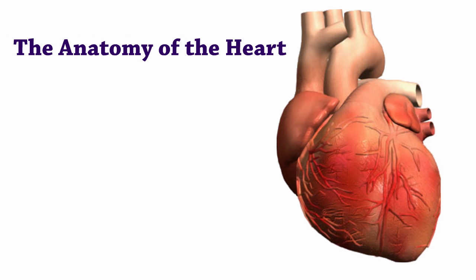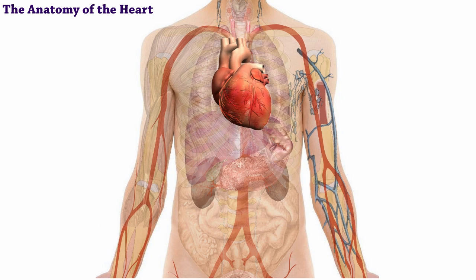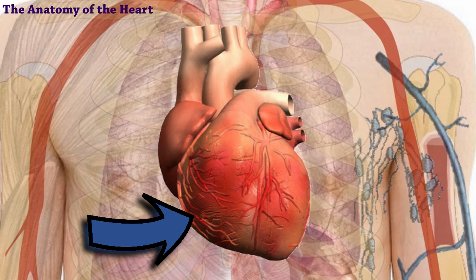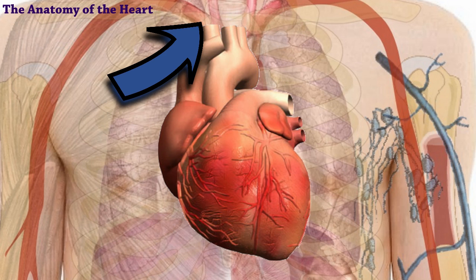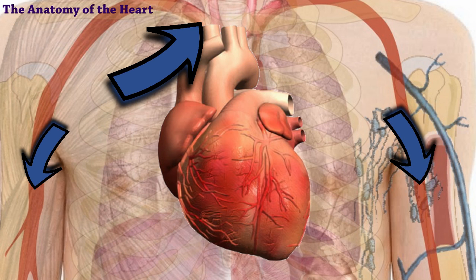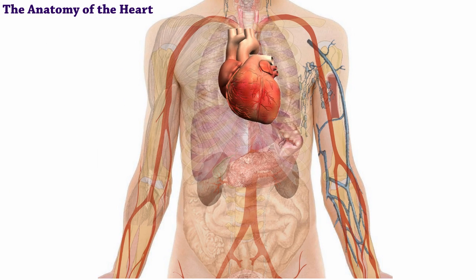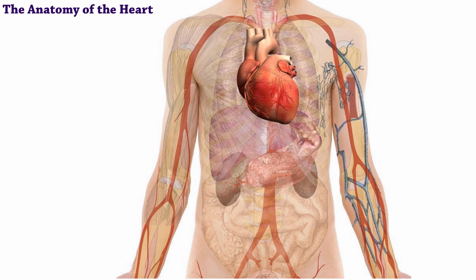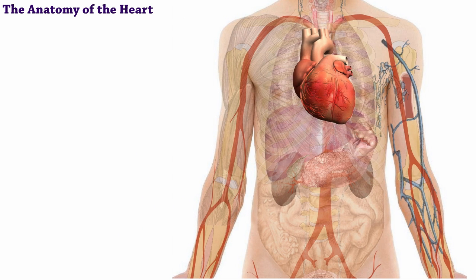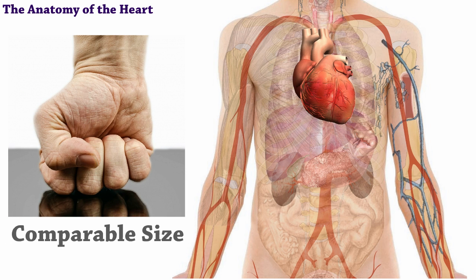Welcome to the Anatomy of the Heart. Your heart is located in the center of your chest. Its muscular walls contract, which creates your heartbeat and pumps blood throughout your body. As your blood moves around, it delivers oxygen and nutrients to every cell. A normal healthy adult heart is about the same size as a clenched fist.